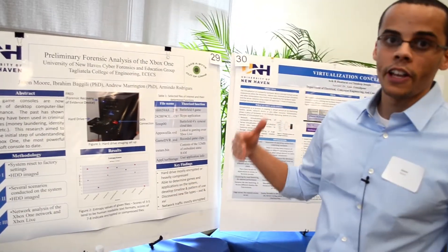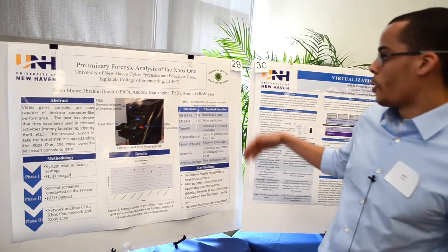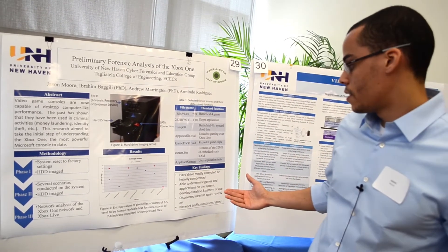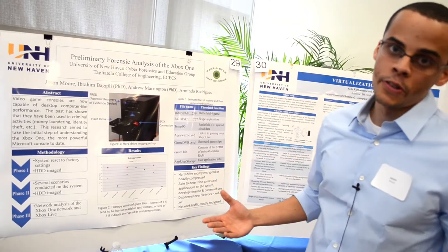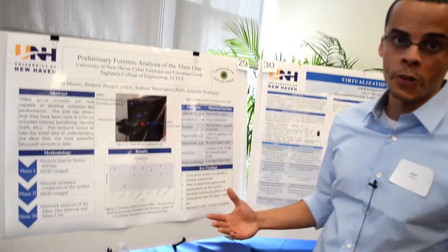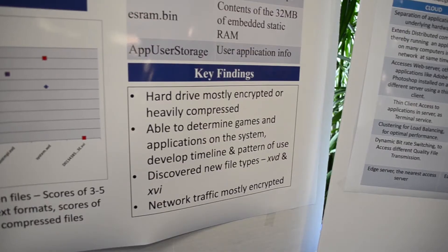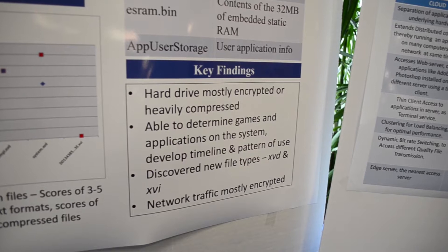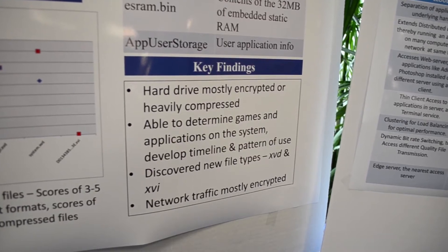We found that it was mostly encrypted, but we were able to put together a timeline and a pattern of use — things of that nature — so it would be useful for an investigation. We also found two new file types: an XPD file and an XVI file, which need to be looked at closer.